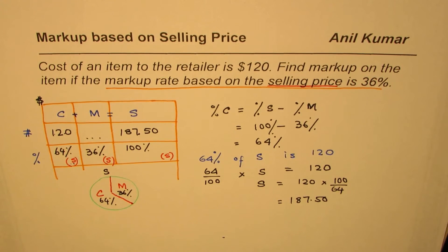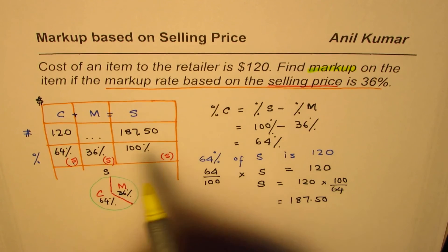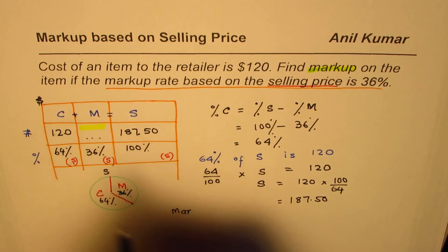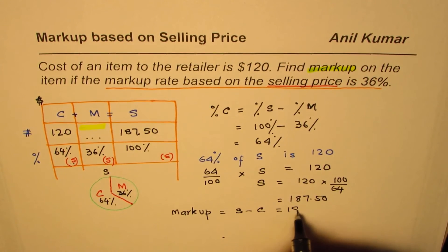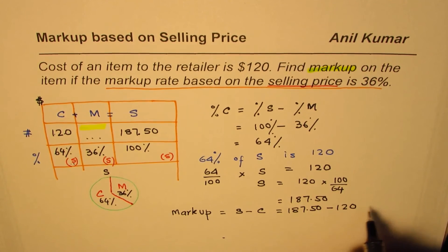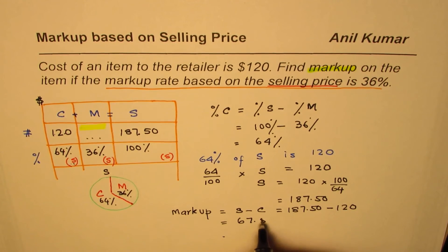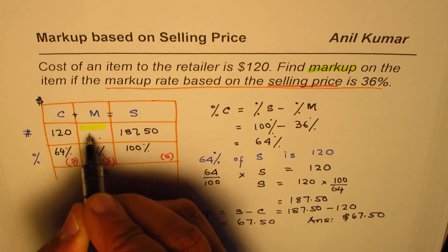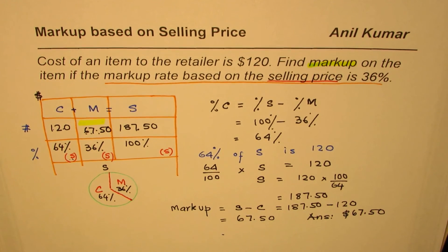The question asks us to find the markup, not the selling price. Markup is the difference between sales and cost price. So markup equals sales minus cost price: 187.50 minus 120 equals $67.50. So the markup is $67.50.